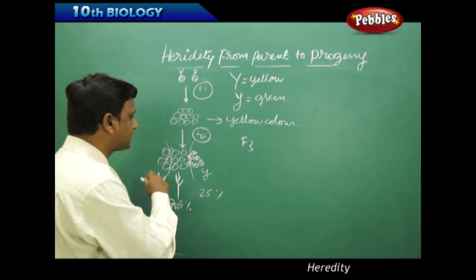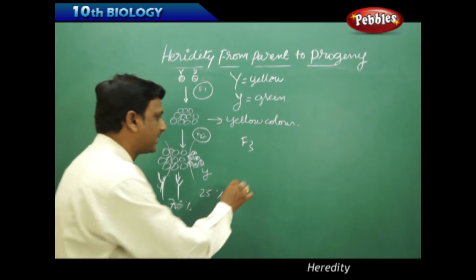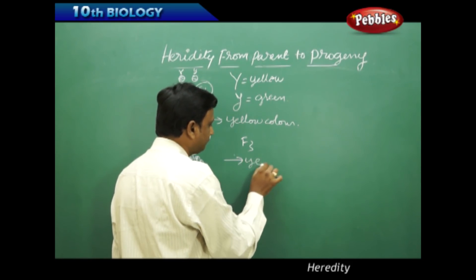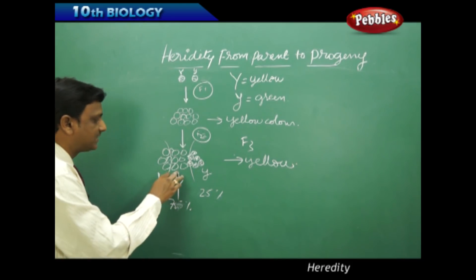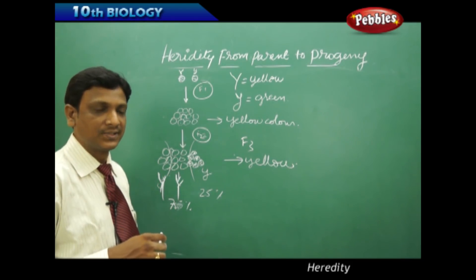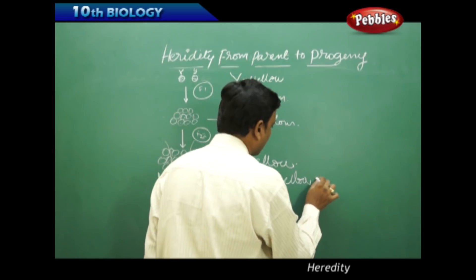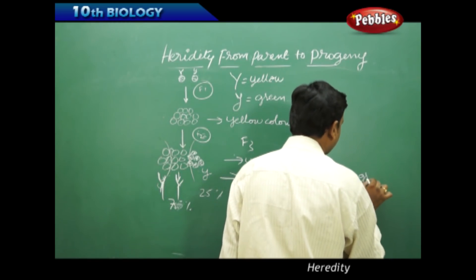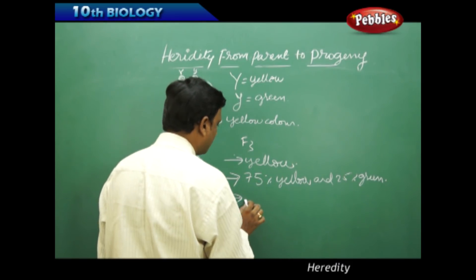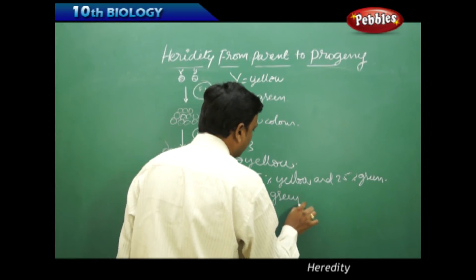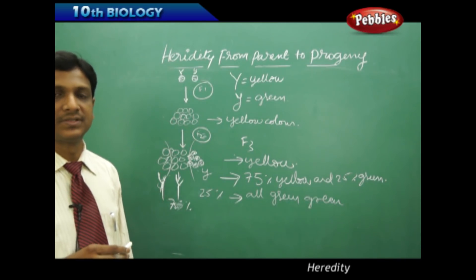Again these seeds are self pollinated for the third generation, F3. A set of yellow color seeds are taken — they have given yellow. The seeds obtained are all yellow in color. From the set of seeds that have both yellow and green, out of that 75 percent yellow and 25 percent green are obtained. And from the green seeds, all green colored pea plants are developed.